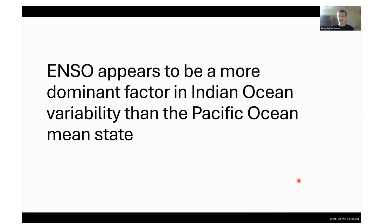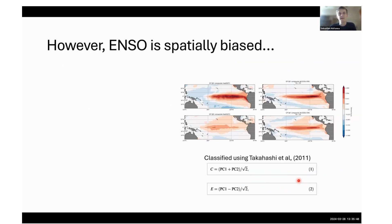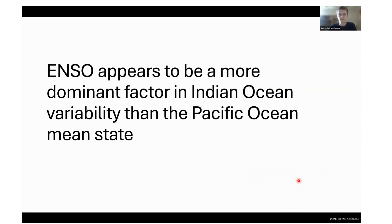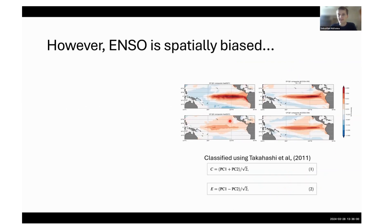ENSO appears to be a more dominant factor in Indian Ocean variability than the Pacific Ocean mean state is. This result has informed the next stage. Because ENSO seems so important to the Indian Ocean Dipole and Indian Ocean variability, we thought — what about the spatial biases in ENSO?